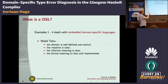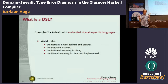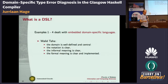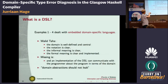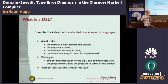Walid Taha, for example, in one of his keynotes gave a definition of a domain-specific language: you have a domain which is well-defined and central, a notation for expressing programs in that domain, the informal meaning is clear so you can explain it in a manual, and — distinguishing it from mere jargon — the formal meaning is clear and implemented. One thing that is missing, I thought: there should not be leakage of domain abstractions when you use this implementation. An implementation of the DSL should be able to communicate with the programmer in terms of the DSL, not in terms of the underlying encoding.